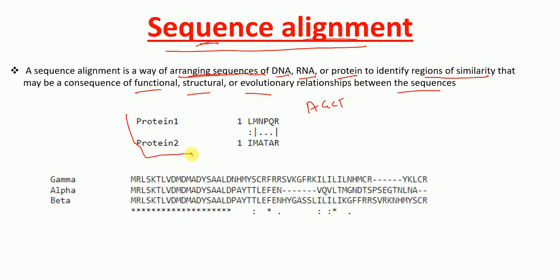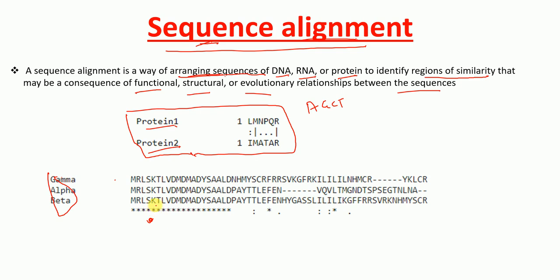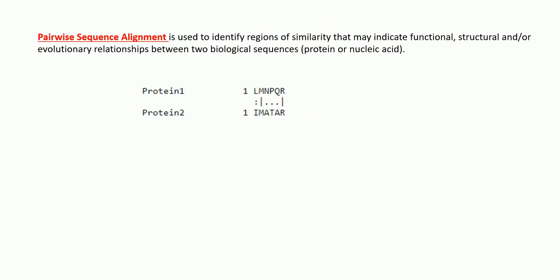Here is an example of an alignment where amino acid sequences have been used. This is protein 1 and protein 2, and this is a pairwise example of pairwise alignment which I'll discuss later. This other example shows three sequences that have been aligned, and this is an example of multiple sequence alignment which I will also talk about in the later slides.